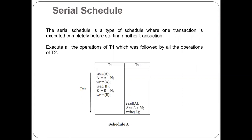For example, there are two transactions T1 and T2. T1 first reads the value of A, then updates the value of A as A minus N, then writes the value of A. After that, T1 reads the value of B, then updates the value of B. After the completion of transaction T1, T2 begins: it reads A, updates the value of A as A plus M, then writes A. This is an example of a Serial Schedule.